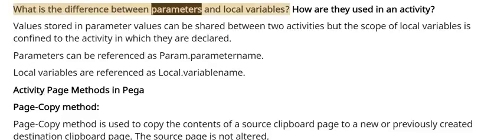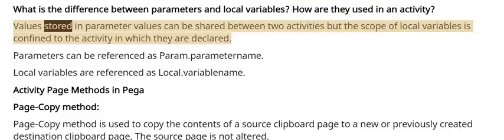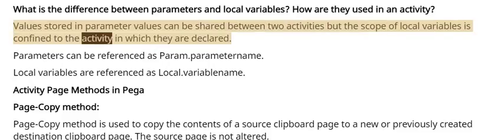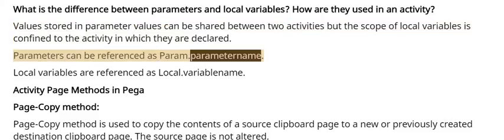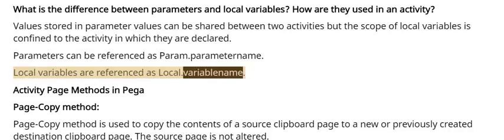What is the difference between parameters and local variables, and how are they used in an activity? Values stored in parameter values can be shared between two activities, but the scope of local variables is confined to the activity in which they are declared. Parameters can be referenced as param.parameter_name, and local variables are referenced as local.variable_name.